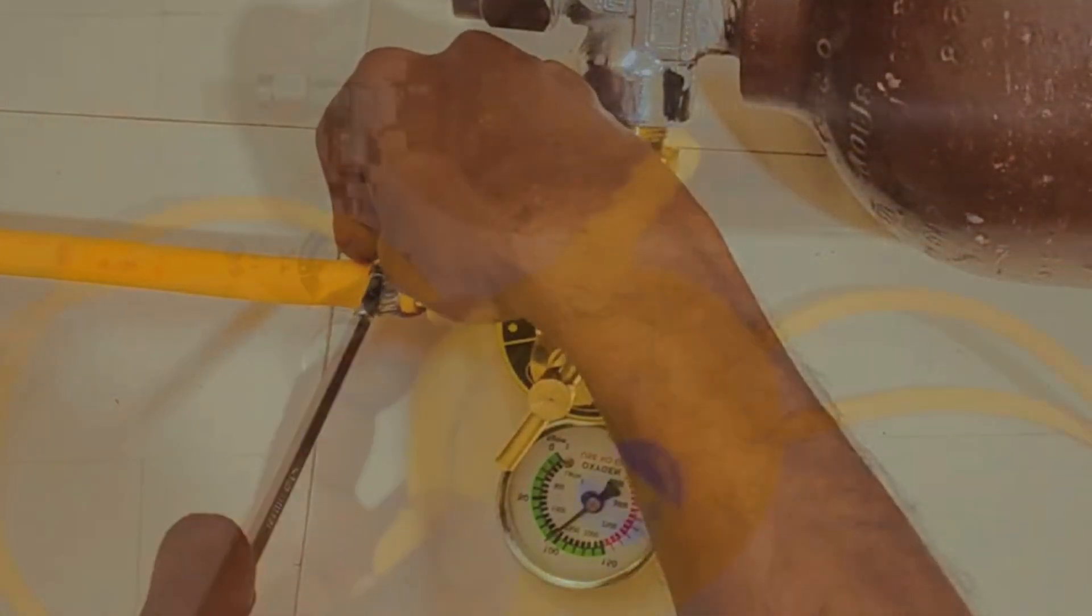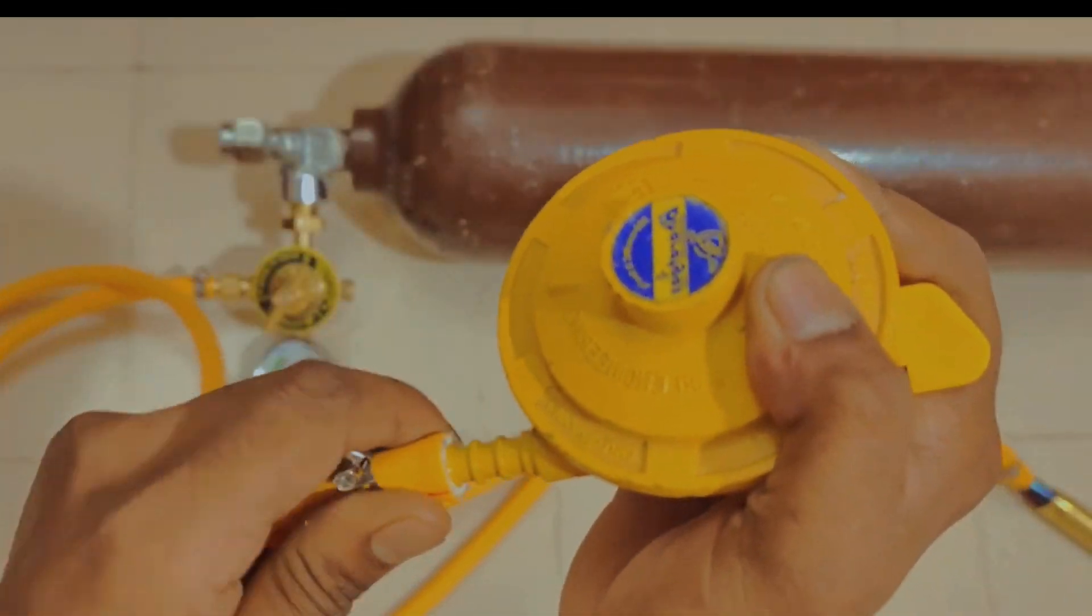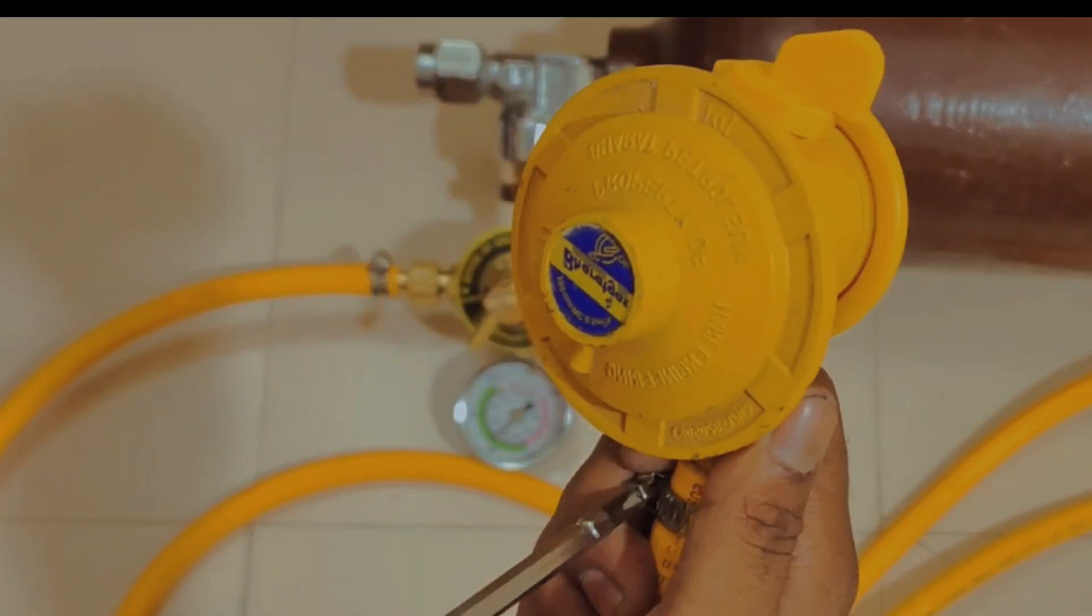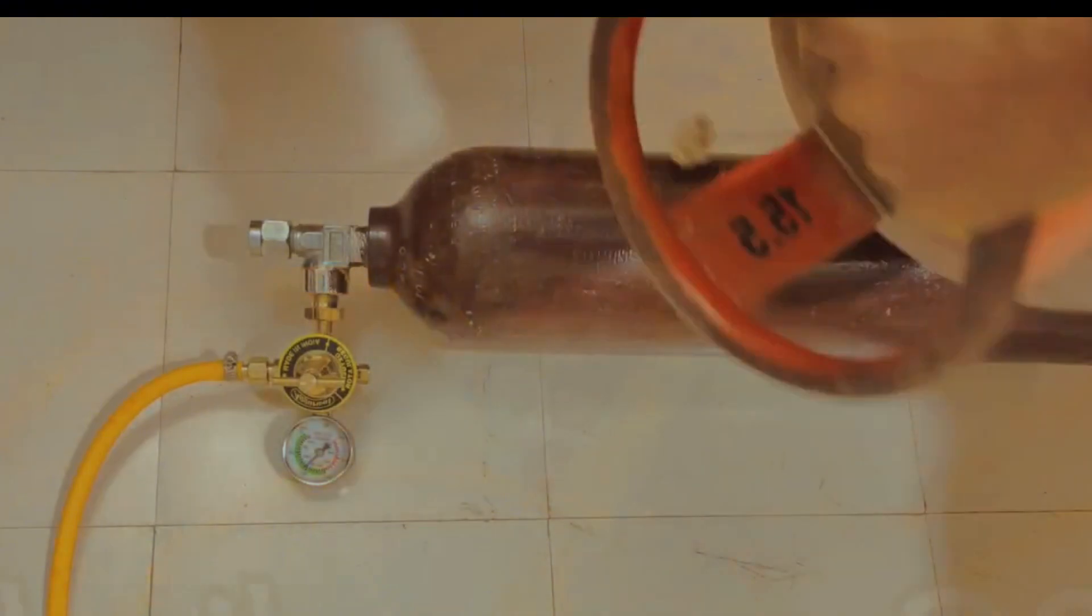A bicycle pump is a device that pumps air into bicycle tires. You can use a bicycle pump to increase the pressure and flow of the propane gas, making the flame hotter and stronger.